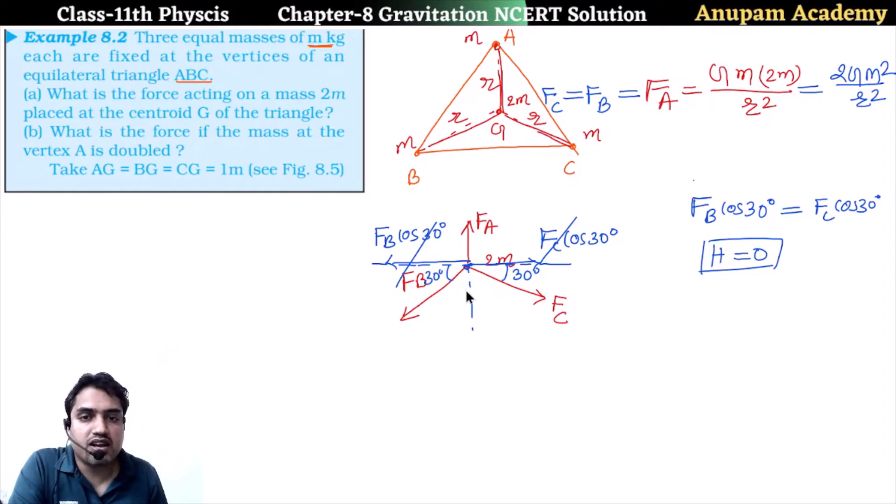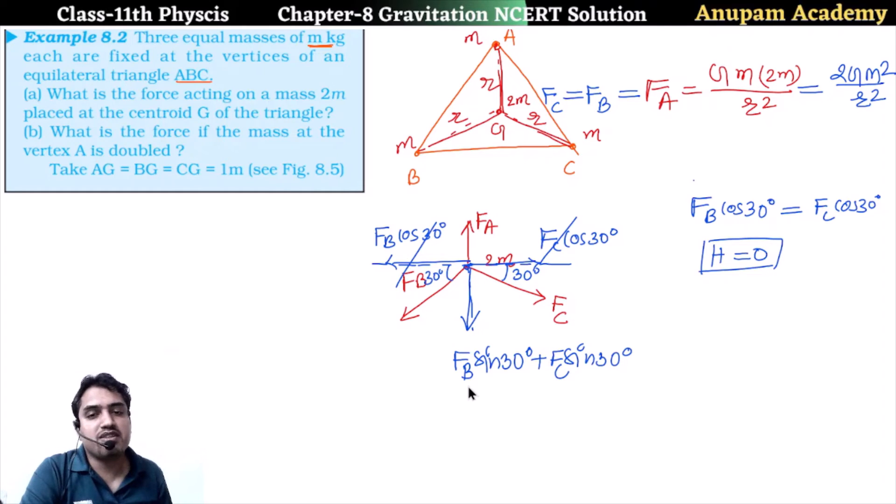Same as it is vertical downward. Two forces will be F_B sin 30 degrees plus F_C sin 30 degrees, which is 2Gm² divided by R² into sin 30 which is 1/2.